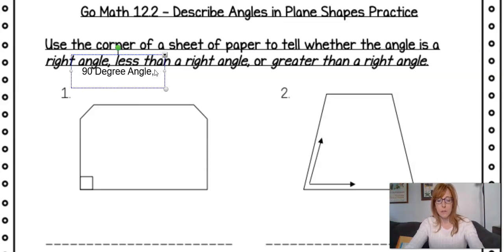Then the next one says less than a right angle. And hopefully you're thinking to yourself, okay what is less than? So here's your 90 degree angle and it would be less than. So that's a cute little angle. So hopefully you remember acute. And that is less than a 90 degree angle.